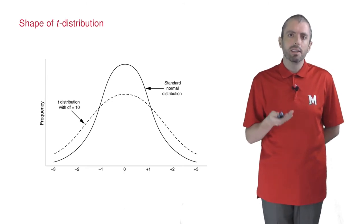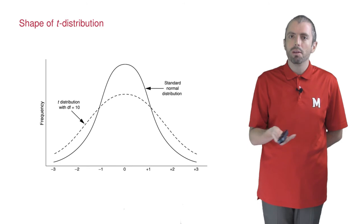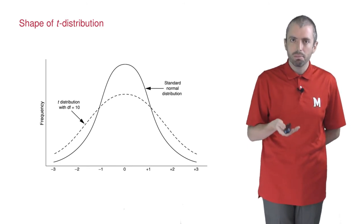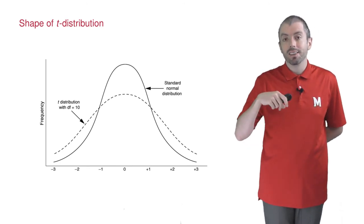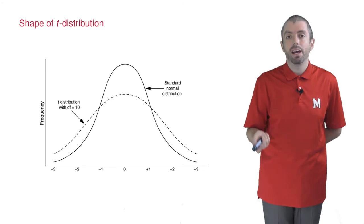Like chi-squared, it has degrees of freedom, which is 1 minus the number of data points, and the less data you have, the fatter the tails.